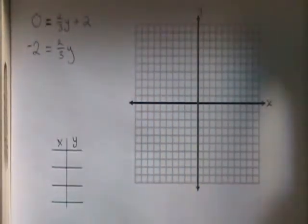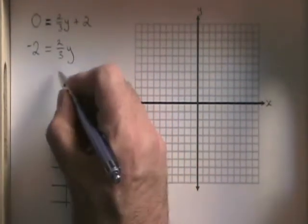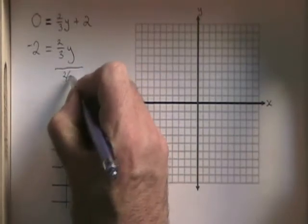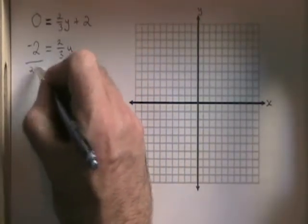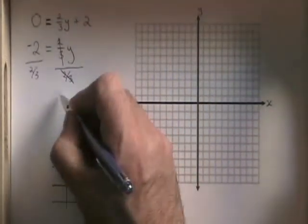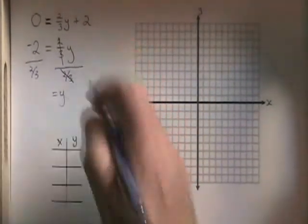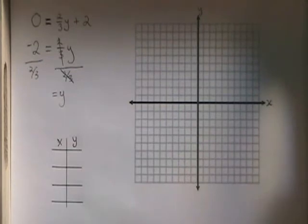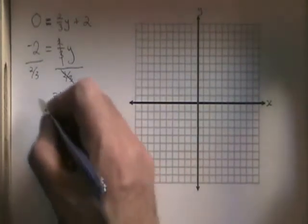And we have negative 2 equals two thirds y. If we divide both sides by two thirds, these cancel. Our y is now isolated on the right side of the equals. And negative 2 divided by two thirds is equal to negative 3.